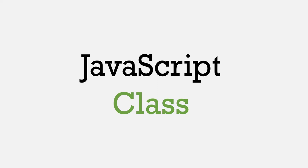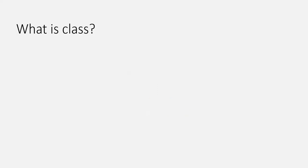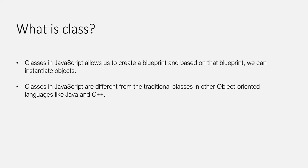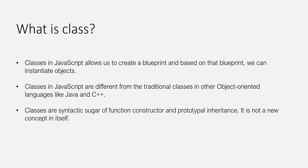Now it's time to turn our attention to JavaScript classes. Classes were introduced in ES6 and allow us to create a blueprint, and based on that blueprint, we can instantiate several objects. Classes in JavaScript do not work like traditional classes in other languages like Java and C++. In JavaScript, classes are simply a syntactic sugar of what we have learned — they still implement prototypal inheritance behind the scenes, but with a syntax that makes more sense to people coming from other programming languages.